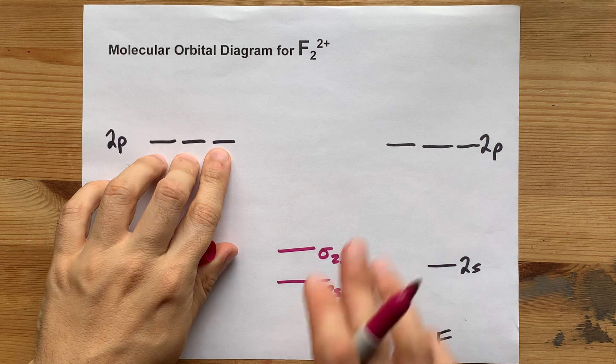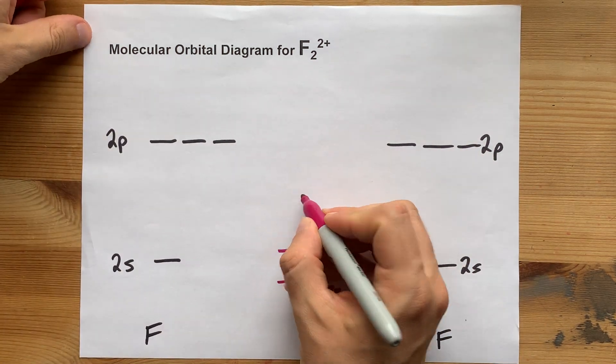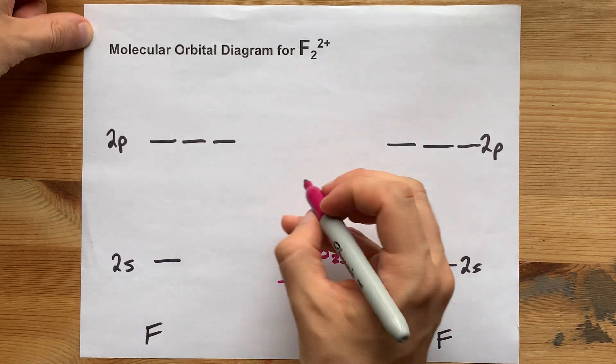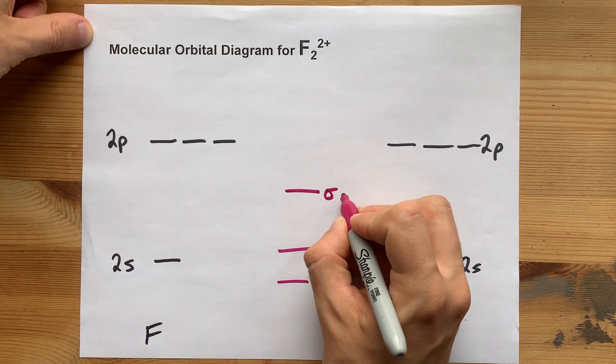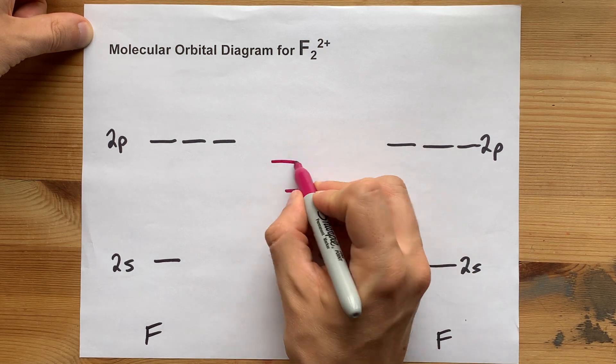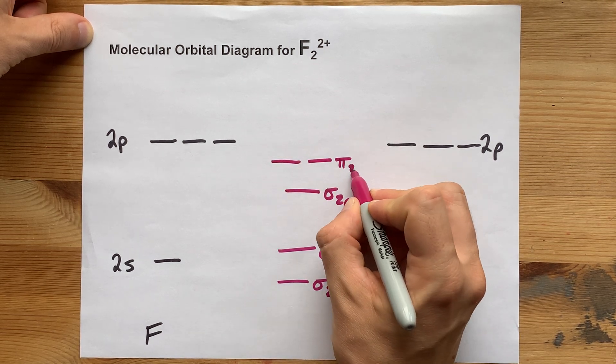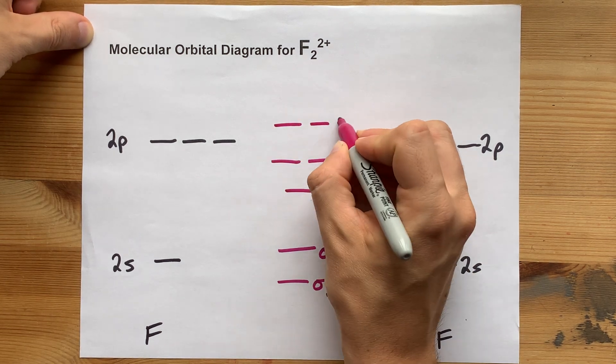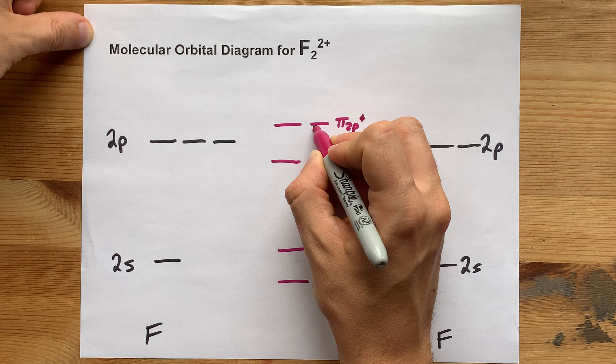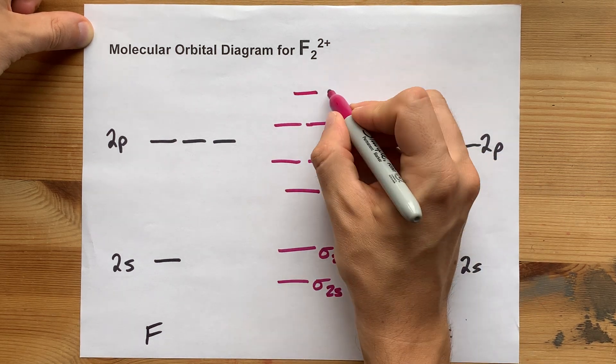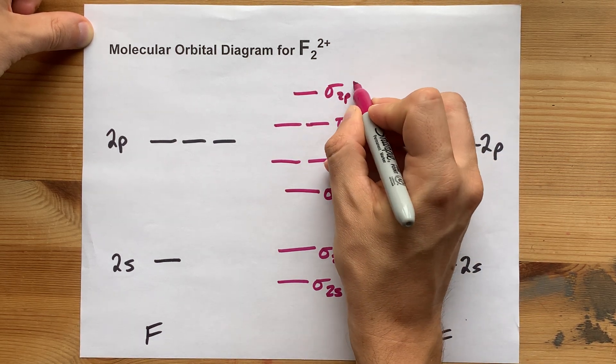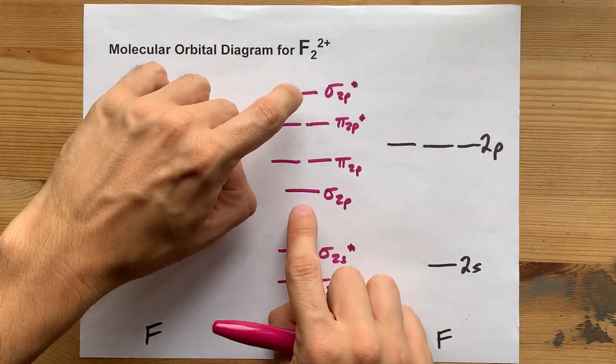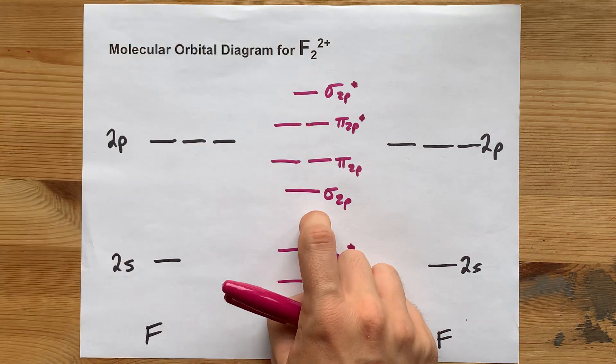When the 2p orbitals overlap, you end up with six molecular orbitals. The lowest energy one is a sigma 2p bonding, then you have pi 2p bonding orbitals, then pi 2p anti-bonding molecular orbitals, and a sigma 2p anti-bonding molecular orbital. So those six atomic orbitals made these six molecular orbitals.